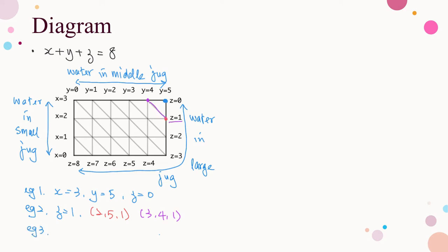One more example. For z equals 4, the two possible cases are (0, 4, 4) and (3, 1, 4). The value of z in the second case can be obtained similarly by the diagonal. You may pause the video to check your understanding of the diagram.